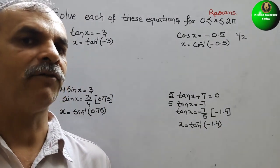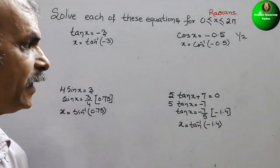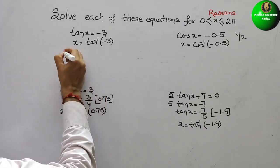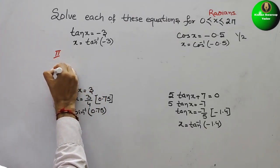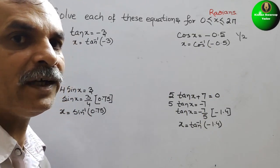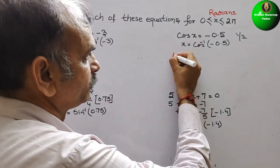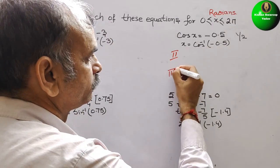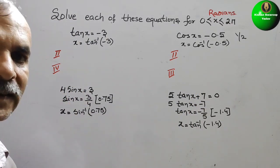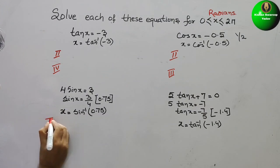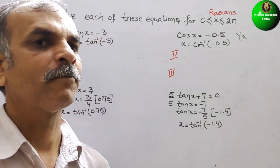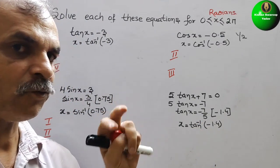Now we will write the quadrants where each value lies. Since tan is negative, it lies in the 2nd and 4th quadrants. Cos is negative in the 2nd and 3rd quadrants. Sine is positive in the 1st and 2nd quadrants. Tan is negative in the 2nd and 4th quadrants.